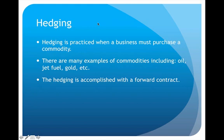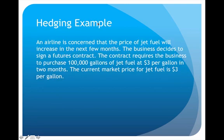The next example of a derivative is called hedging. Hedging is a fairly common business practice, and most of the time the businesses that practice this are businesses that have to buy a commodity of some type. There are all sorts of examples of commodities — things like barrels of oil, jet fuel, gold, any kind of resource that a company has to regularly buy, especially if it's a resource with a fluctuating price. The reason we hedge is because we're worried about price changes, and we accomplish this by using forward contracts. These are a derivative because the value is derived from the value of the commodity.